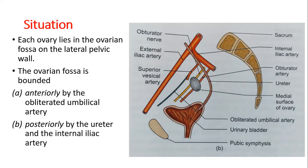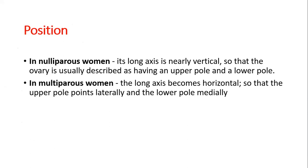The ovarian fossa is bounded anteriorly by the obliterated umbilical artery. After birth, the umbilical artery and veins obliterate and become ligaments. Posteriorly it is bounded by the ureter and the internal iliac artery, which is a branch of the common iliac artery.